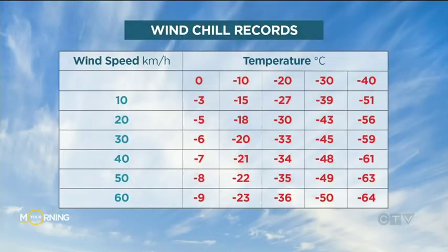Wind chill is a calculated value — it's not measured — which is why we don't say 'it feels like minus 15,' because we can't actually measure it. We calculate it using this chart from Environment Canada. For example, if it's minus 10 and the wind is at 10 kilometers an hour, it feels like minus 15. If the wind's coming in at 60 clicks an hour, it feels like minus 23.